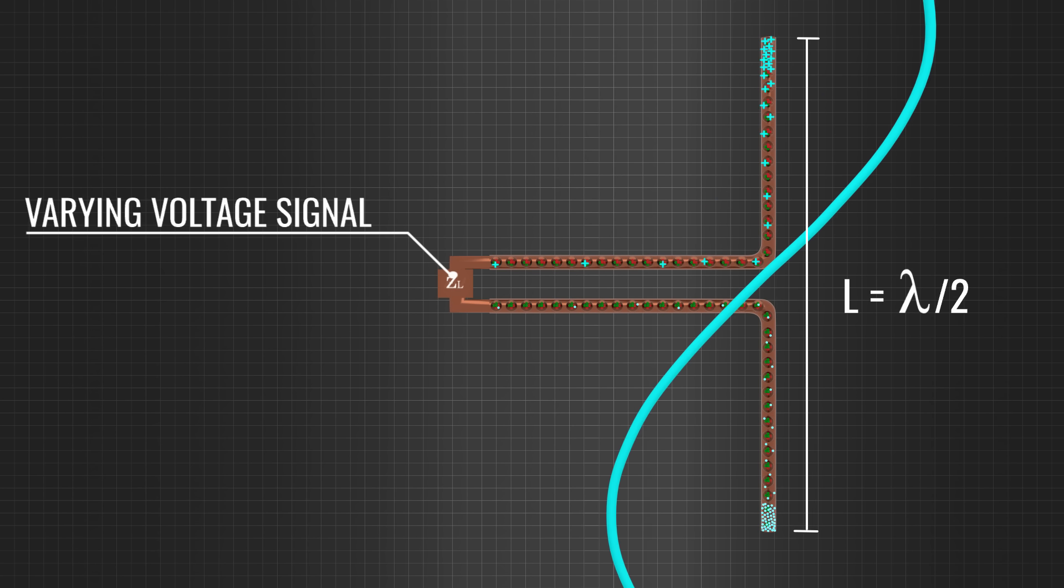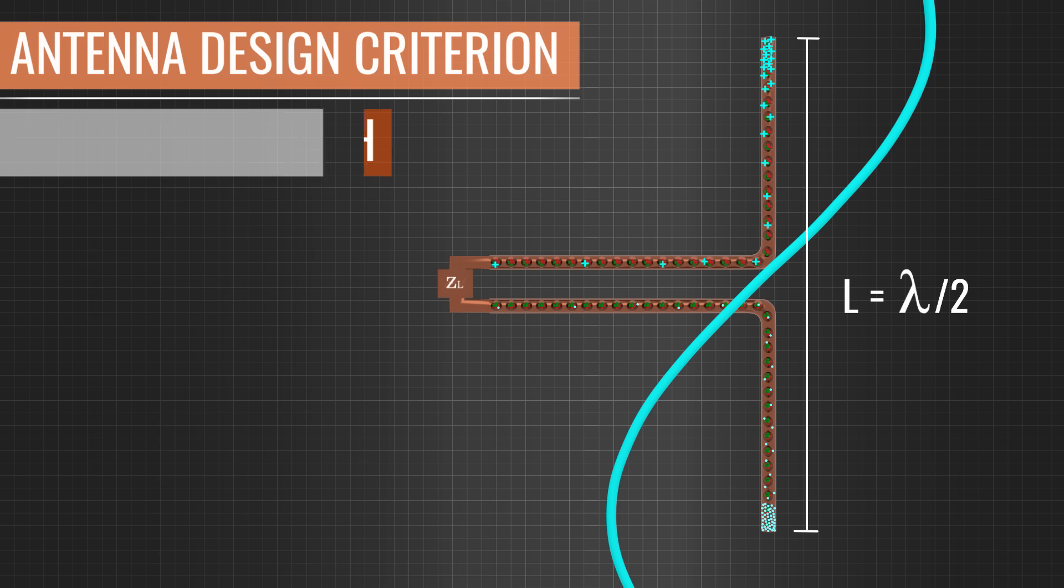We can note here that for perfect transmission or reception, the length of the antenna should be half of the wavelength. This is the first antenna design criterion for proper reception or transmission.